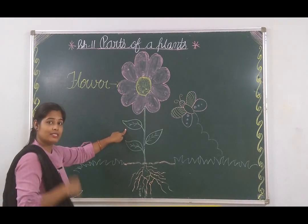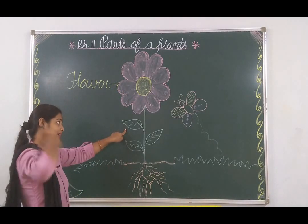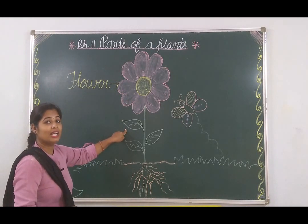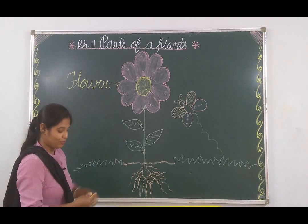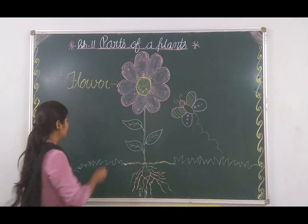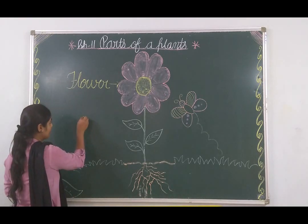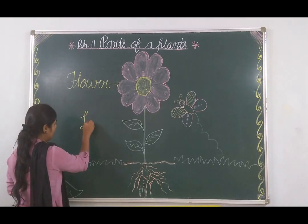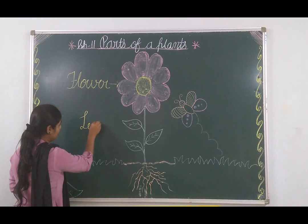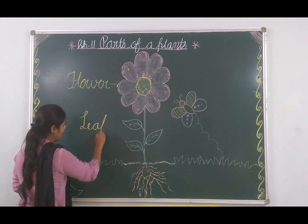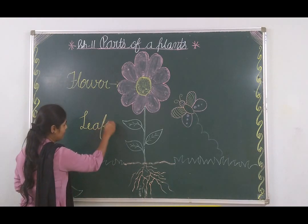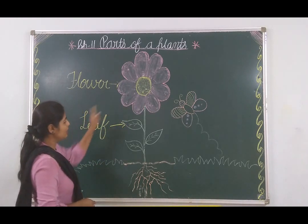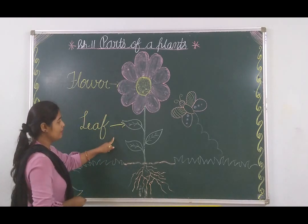So what is this? It's called leaf. It's called leaf. And what is the spelling of leaf? L, E, A, F. Leaf. Flower, leaf.